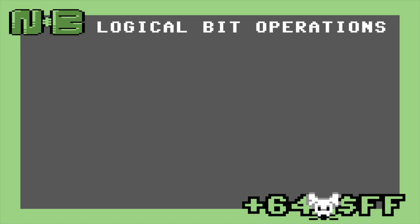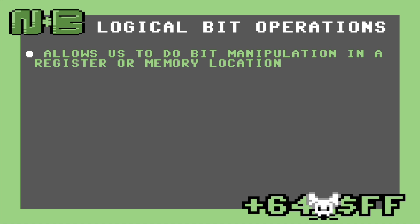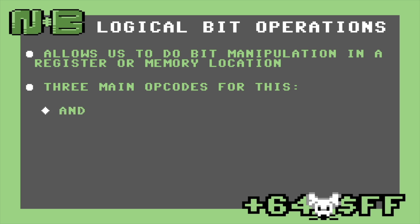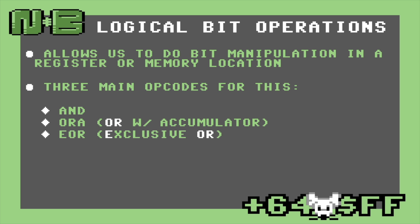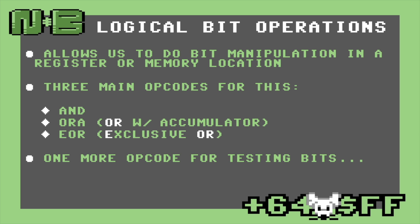The other set of instructions we'll cover will allow us to do individual bit manipulations. There are three main opcodes used to manipulate bits on the 8502: AND, ORA — or just OR with the accumulator — and EOR, or exclusive OR. The 8502 designers also gave us one more opcode for testing bits, which is imaginatively named BIT.